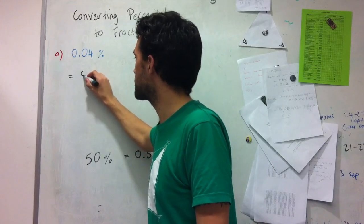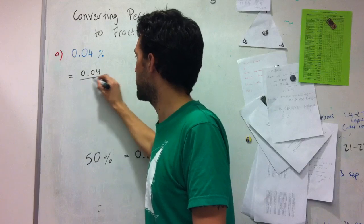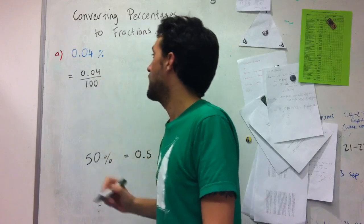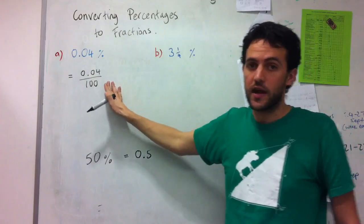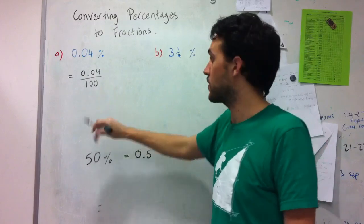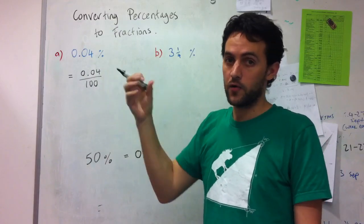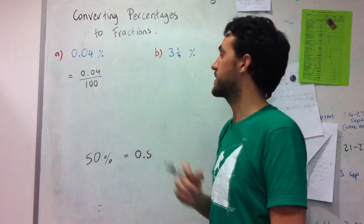So this is equal to zero point oh four divided by one hundred. Now this is not an acceptable fraction because a fraction needs to have whole numbers as both the numerator and the denominator.